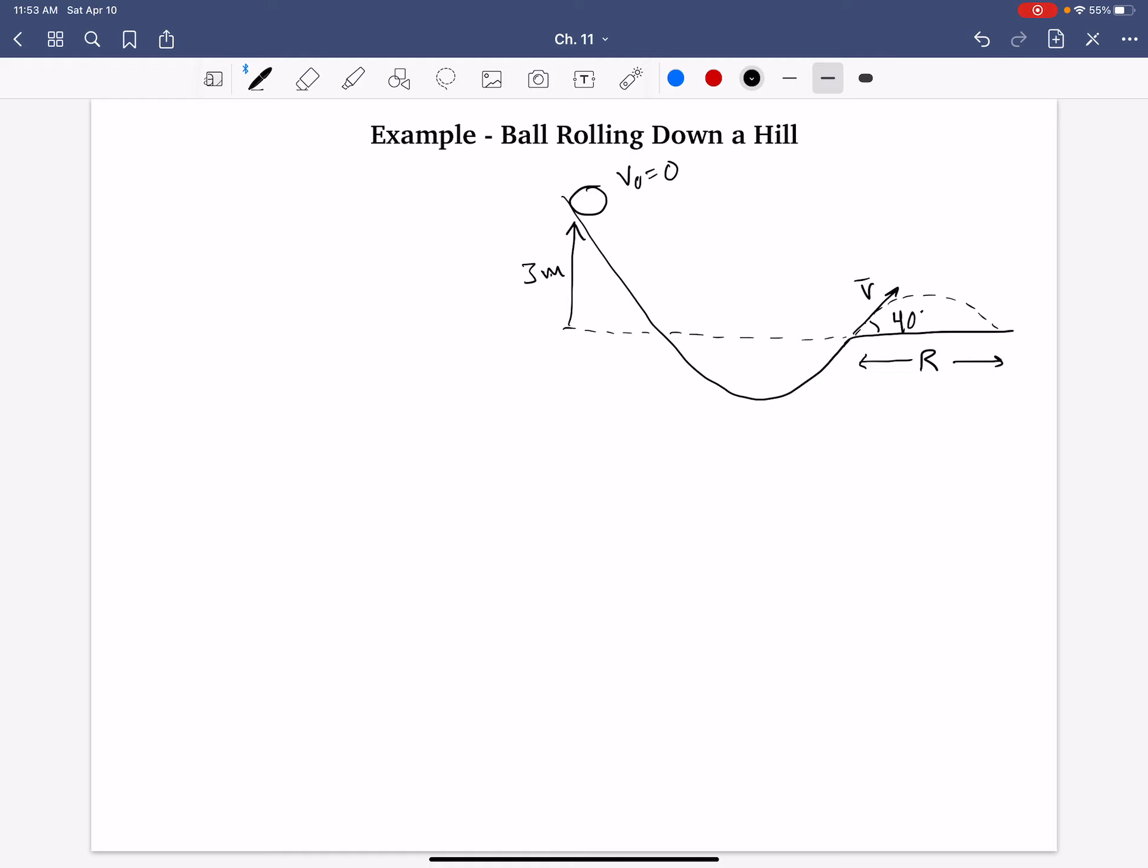all of the energy is in the form of potential energy. It has stored gravitational potential energy that, when released, the ball will roll, gaining both linear speed v and rotational speed. In other words, it'll gain kinetic energy, translational kinetic energy, as well as rotational kinetic energy.